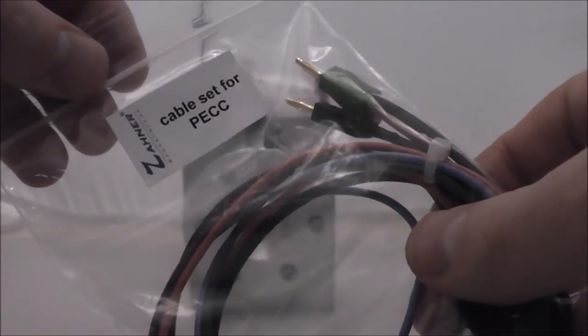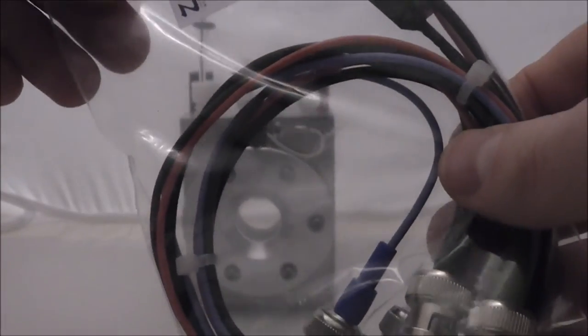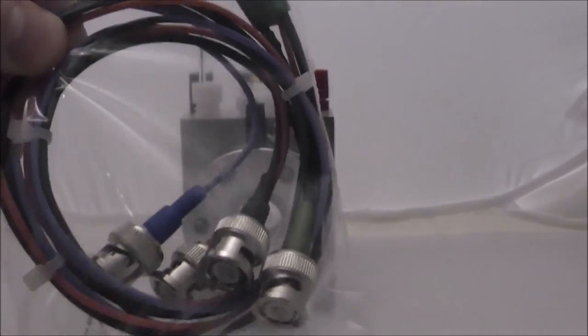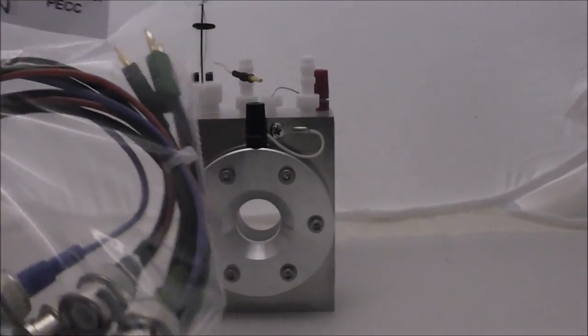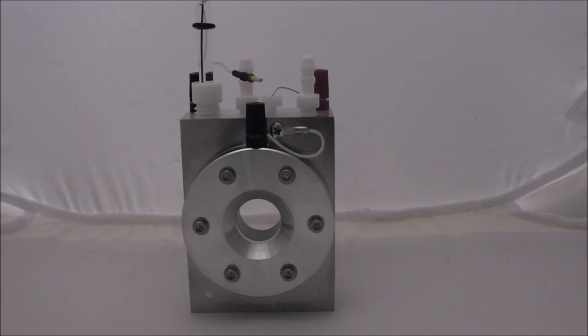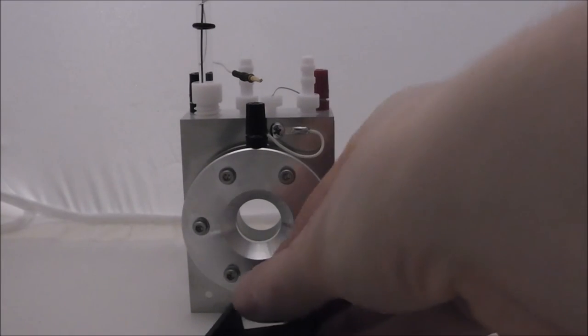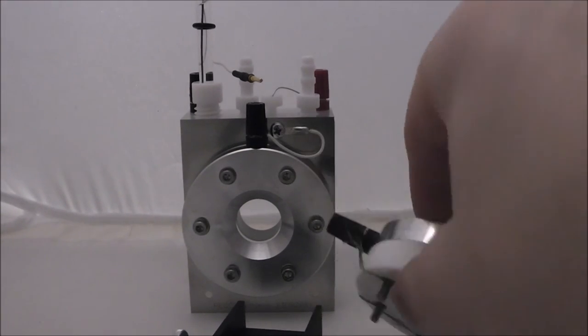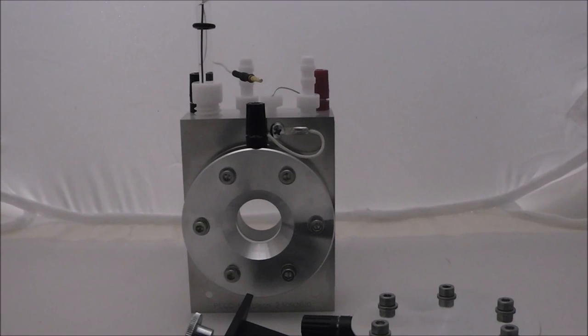They include a pack of BNC connectors so that you can connect to the front of the Zahna Potentiostats and their SIMPS systems. Zahna makes a really nice job of including all the accessories, so that once you get the PEC2 cell, other than putting your chemistry in there and your working electrode, you're really good to go. It's a very nice, complete solution.